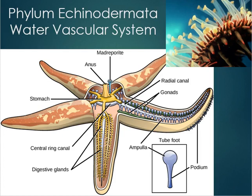The mouth of a starfish is on the underside of the animal. To eat larger prey, it can push its stomach outside through its mouth, release digestive enzymes onto the prey, digest it externally, and then ingest the broken-down material. Waste exits through the anus on the top of the animal. We'll stop here because the next and final group we'll cover are the chordates.